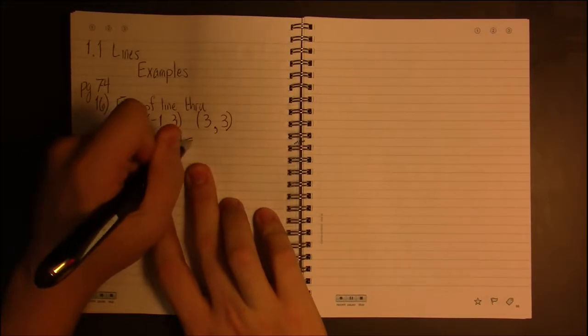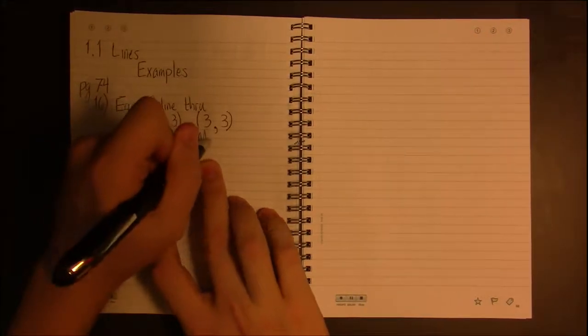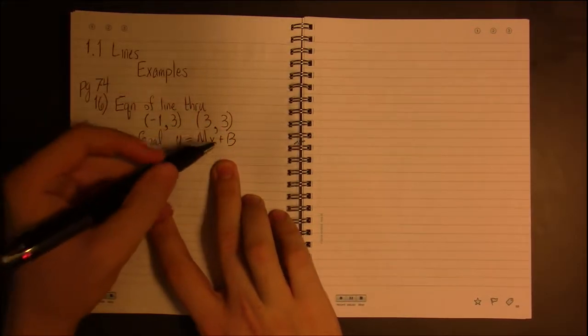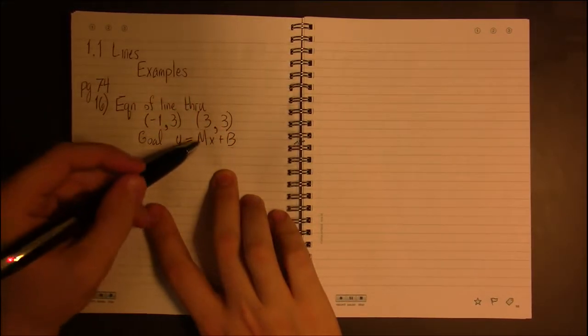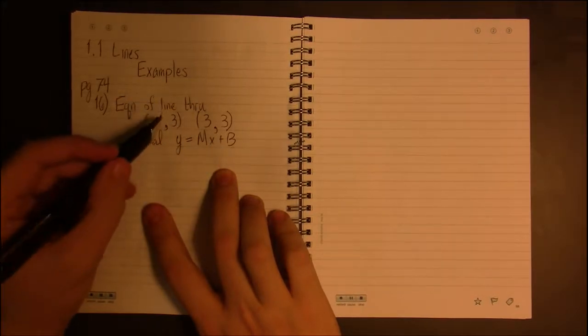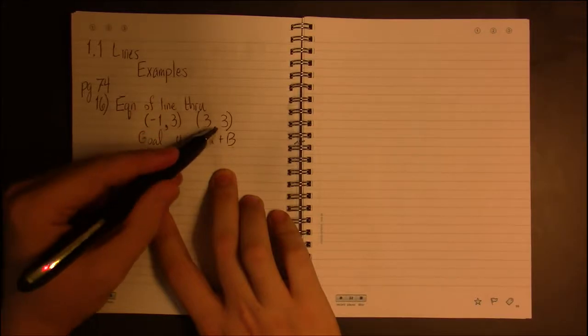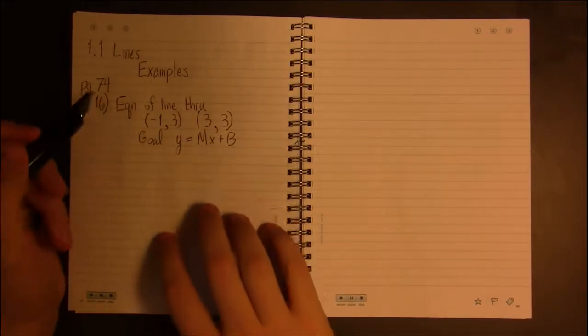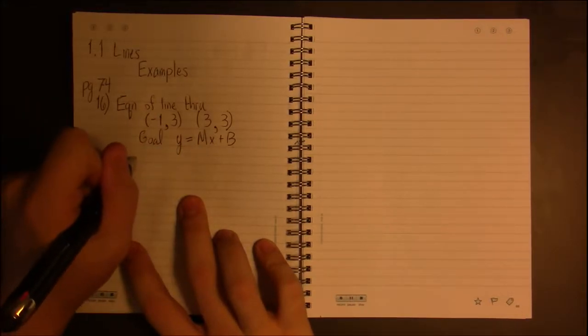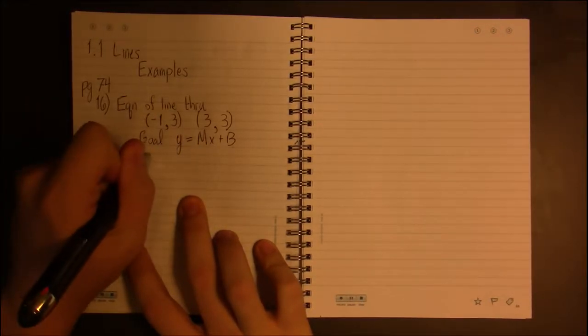of a line, what we're asked to do is to write this out except we need to find the values for M and B that are associated with this pair of points. So first thing we do is find the slope.